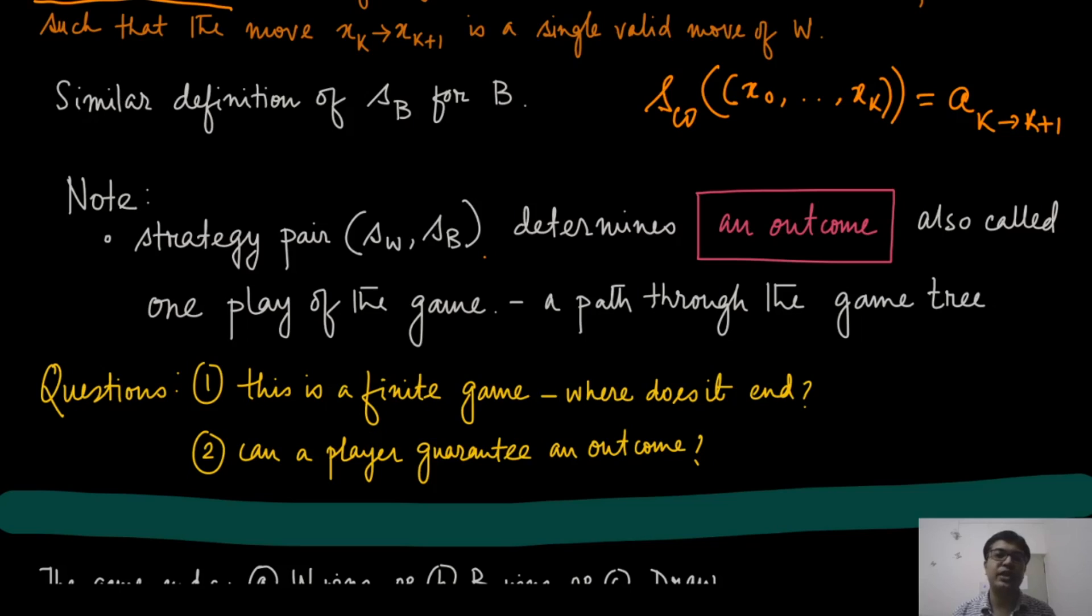And you can continue this procedure until you reach a leaf node, which will actually end in one of the three outcomes, win for white, win for B or a draw. So, this is also called, sometimes called one play of the game. All these are different names of the same thing. And if you just think carefully, the strategy pair is defining an outcome which is actually a path to the game tree. Of course, whenever we are playing the game of chess, we are actually tracing one unique path on this tree.